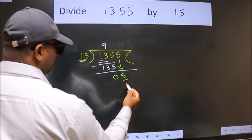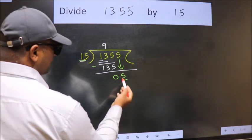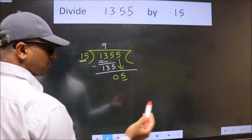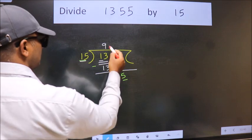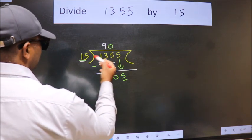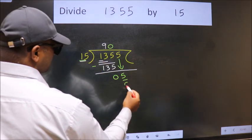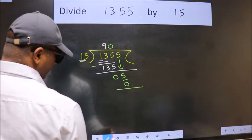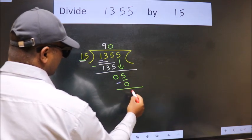But 15 is larger than 5, so what we do is we take 0 here. So 15 into 0 is 0. Now we subtract. We get 5.